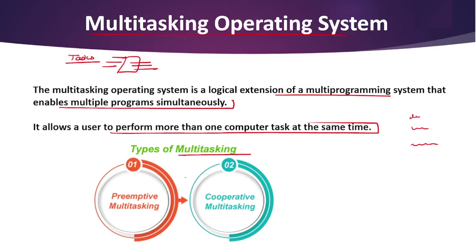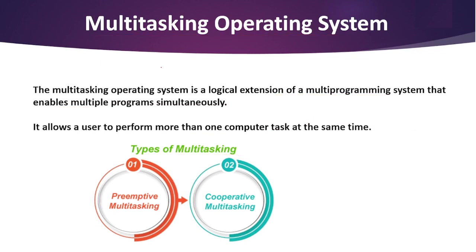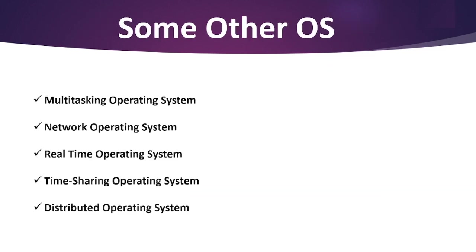We have basically two types of multi-tasking: pre-emptive and cooperative. Advantages of using this operating system include that it is more suited to supporting multiple users simultaneously and it helps complete work faster. Multi-tasking operating systems also have well-defined memory management. Next four types — network operating system, real-time, time-sharing, and distributed — we will discuss in the next video.